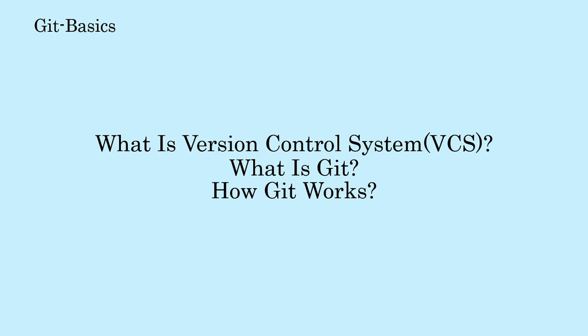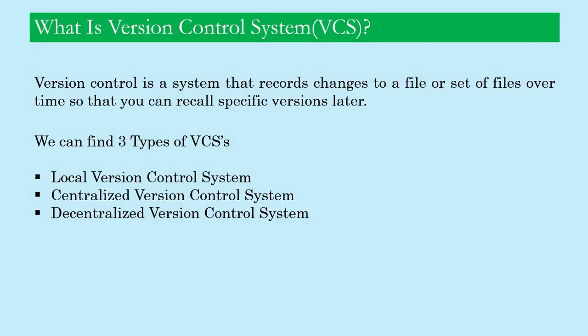So let us see what is version control system first. Version control is a system that records changes to your file or set of files over time so that you can recall specific versions later.